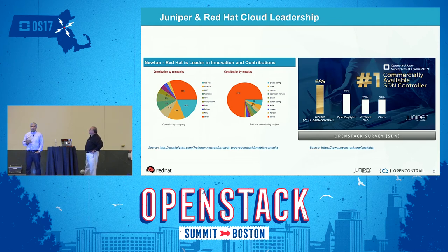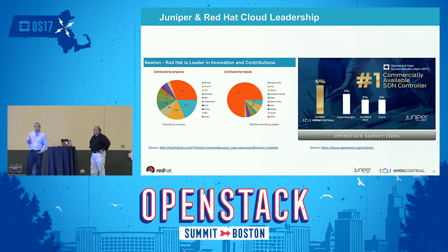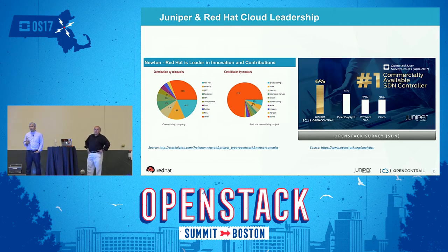Juniper and Red Hat have jointly deployed in many environments. Red Hat is the leader for open source and a top contributor to OpenStack. OpenContrail has been rated the number one commercially deployed SDN solution in OpenStack environments in the latest OpenStack user survey — not just for this Boston Summit, but consistently over four years. Users' requirements are driving our roadmap.